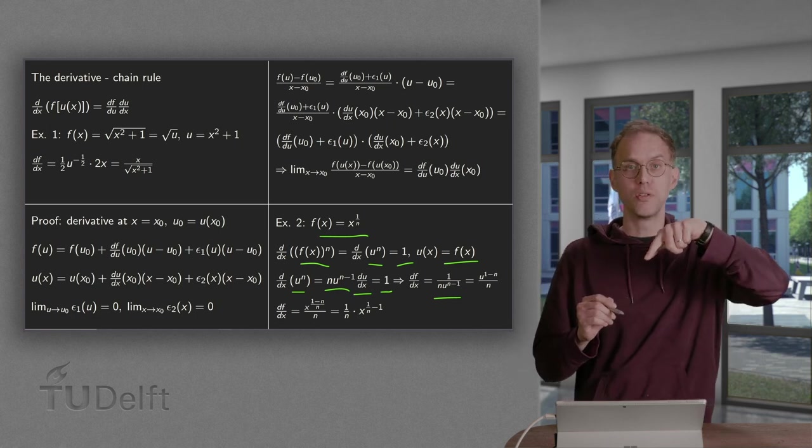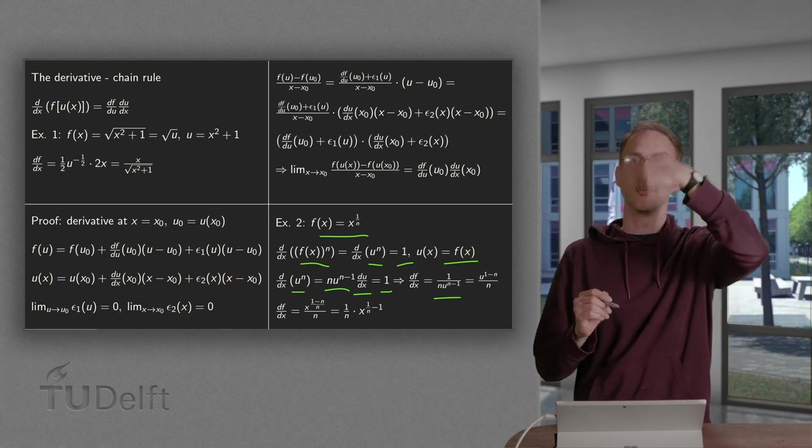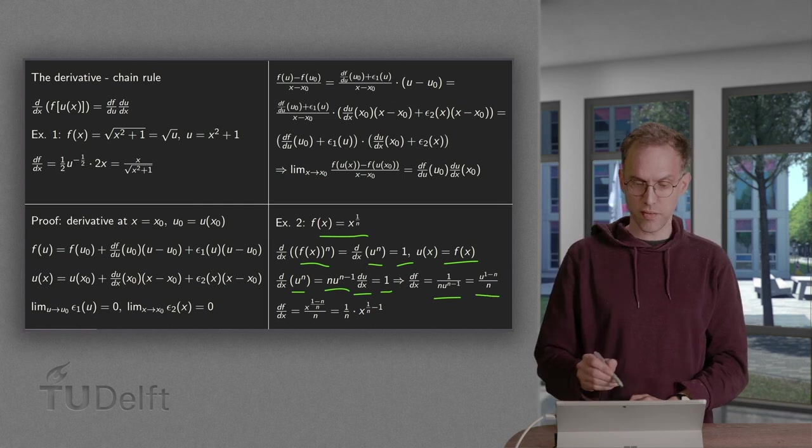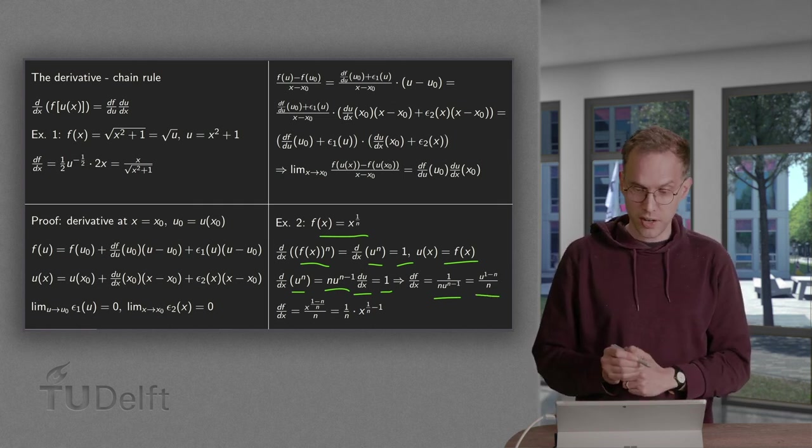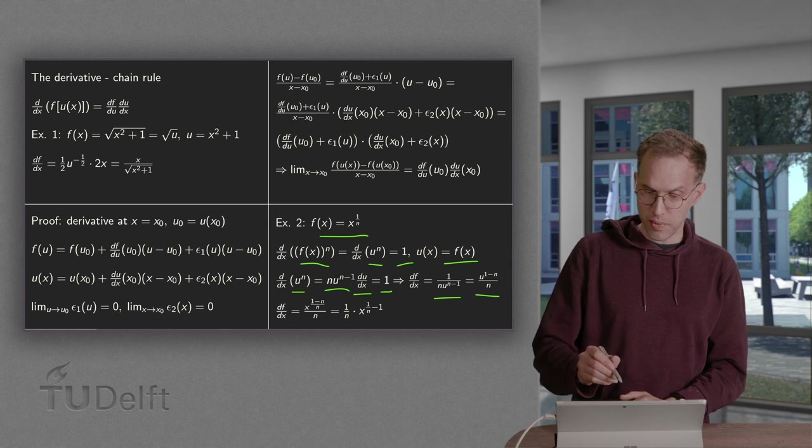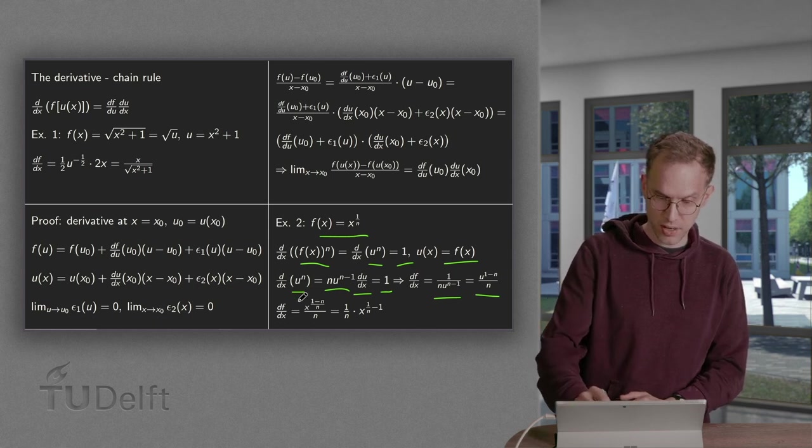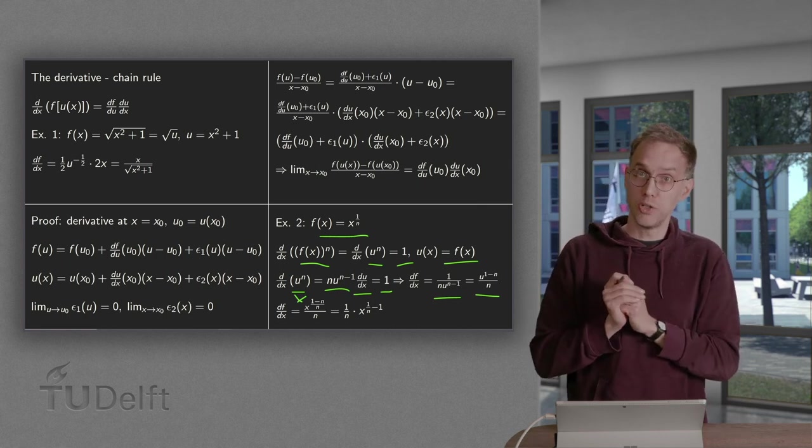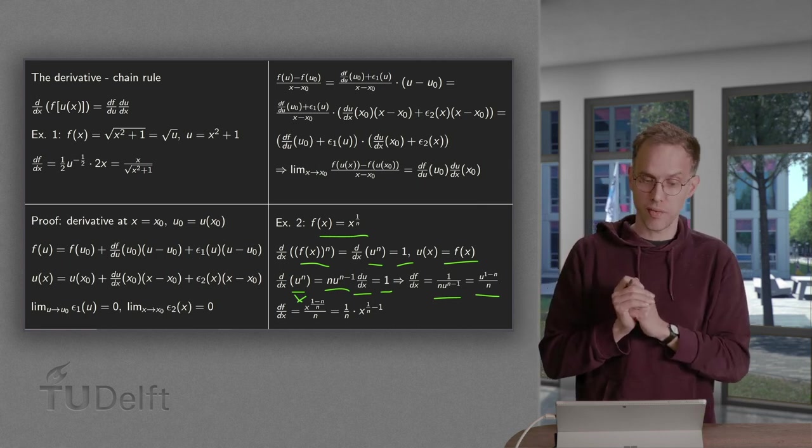Simplify a bit. 1 over u to the power n minus 1 equals u to the power 1 minus n. So we are over there. The u to the power 1 minus n equals x to the power 1 minus n over n because u equals x to the power 1 over n.